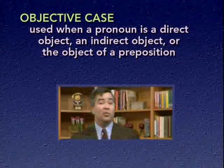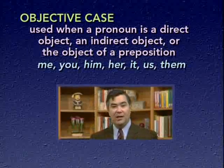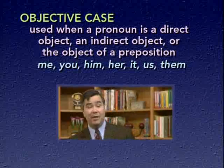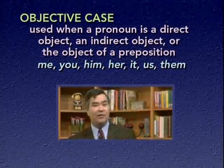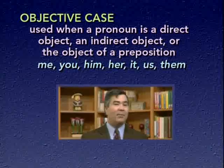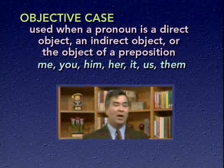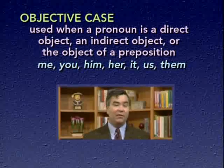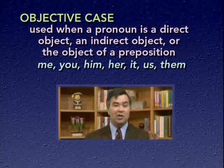The objective case personal pronouns include me, you, him, her, it, us, and them. Note that you and it appear on both the subjective and objective case lists — those two pronouns can be used either way. All other personal pronouns differ between subjective and objective case, and it's important to recognize the difference to use them correctly.